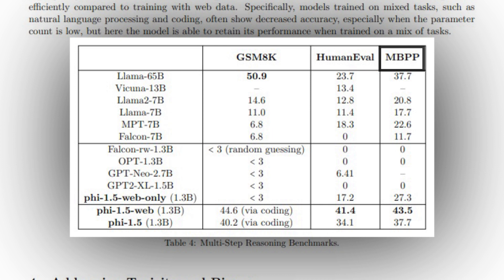They benchmark tested PHI's multi-step reasoning prowess using GSM 8K, Human Aval, and MBPP standards. And as you'll see in the table, PHI 1.5 beats other competing models in Human Aval and MBPP benchmarks, and comes out as a close second to the GSM 8K benchmark.